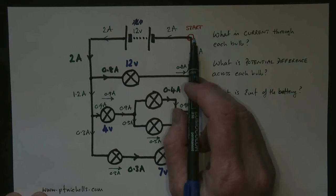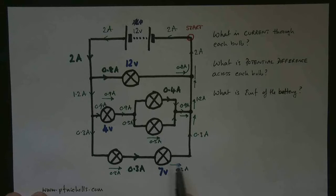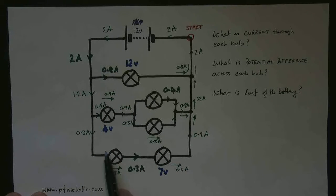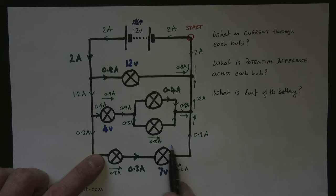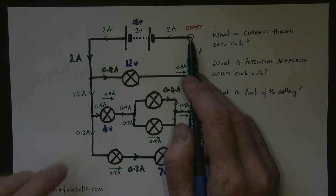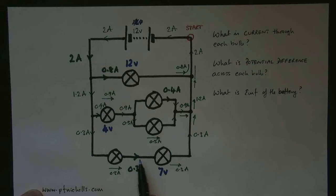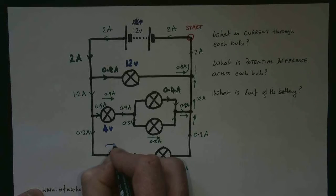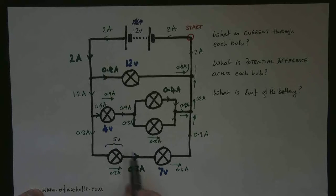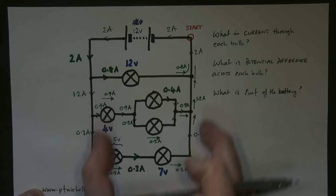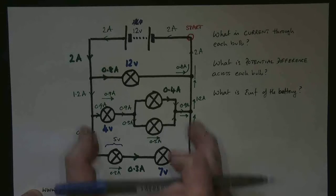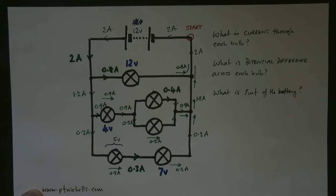Now let's take a different journey — around the bottom loop this time. We start from here, we have an EMF of 12 volts, a potential difference of something we don't know, another potential difference of 7, and back. So 12 must equal something plus 7, and therefore this potential difference must be 5 volts — because 5 and 7 is 12. The 12 volts of the battery gives us 12 volts across the two components in series: 12 volts for the battery, 7 plus 5 equals 12 volts for the two bulbs.